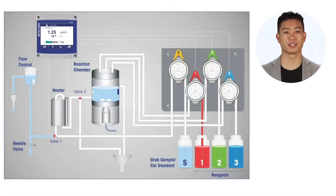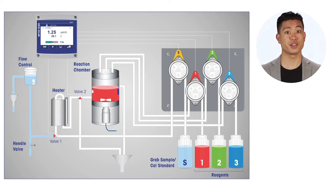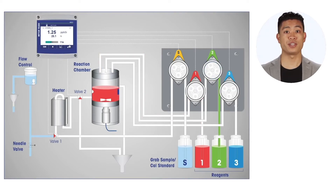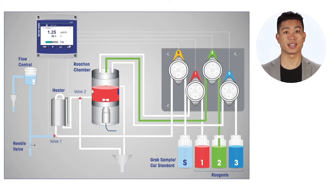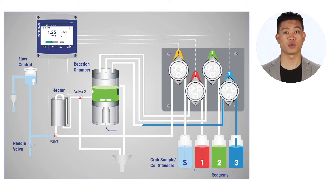Though serving different purposes, online measurement methods of both silica and phosphate use a molybdate reagent that produces a color change reaction with silica that is detected photometrically. To achieve low-level sensitivity, the color change is enhanced using an additional reducing reagent.